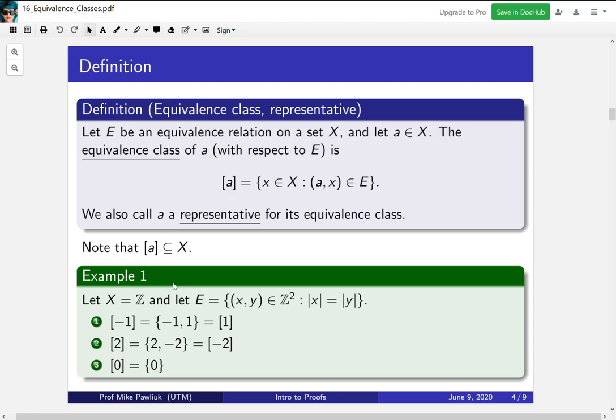Now let's look at some examples to help really understand what's going on here. Let X be the set of integers. And let E be the collection of all pairs such that the absolute value of the first coordinate equals the absolute value of the second coordinate. In other words, x and y are related if they have the same absolute value. So what's the equivalence class of minus one? Well, what things have the same absolute value as minus one? That's minus one and one. So you could represent the equivalence class of minus one as these two points, but you could also represent it as the equivalence class of one. Both are fine.